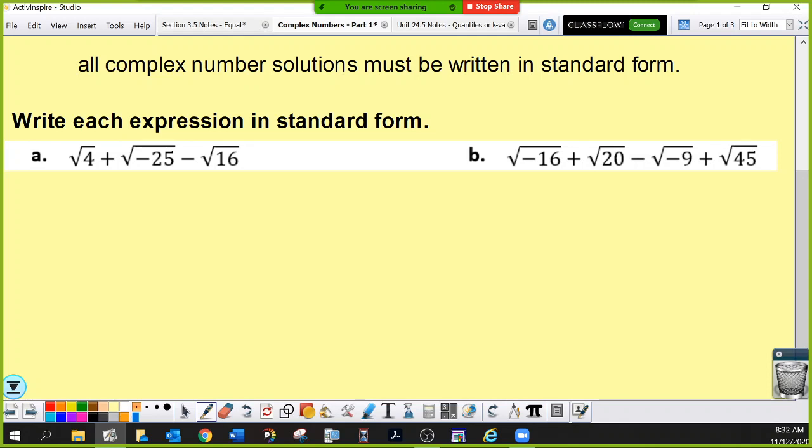For these first two questions, we've just been told to write each expression in standard form. That means we have to reduce our radicals, combine our like terms, and then make sure that our answer is written in standard form, a plus bi form. Starting off easy, what's the square root of 4?